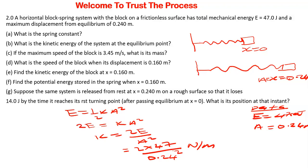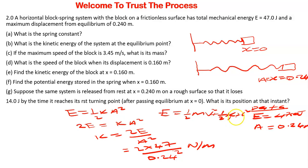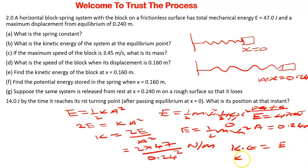Part B is asking: what is the kinetic energy of the system at the equilibrium point? At the equilibrium point, x equals 0. Using equation 1, which is E equals one-half mv squared plus one-half Kx squared, when x equals 0, the potential energy term becomes 0, and the total energy only becomes equal to the maximum kinetic energy. So the kinetic energy at the equilibrium point is just equal to the total energy — 47.0 joules.